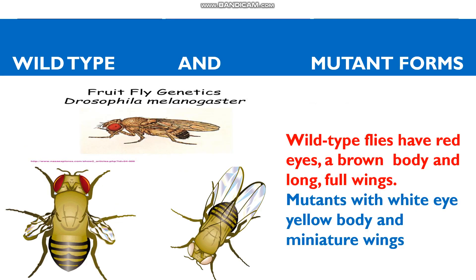In Drosophila melanogaster, the normal forms are called wild type, while the other forms are called mutants. Wild types are crossed with mutant forms. Wild type are the normal flies — they have red eyes, brown body, and long or full wings.